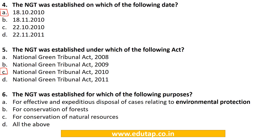MCQ 6: The NGT was established for which of the following purposes? A. For effective and expeditious disposal of cases relating to environmental protection, B. For conservation of forests, C. For conservation of natural resources, D. All of the above. The correct answer is D. All of the above.